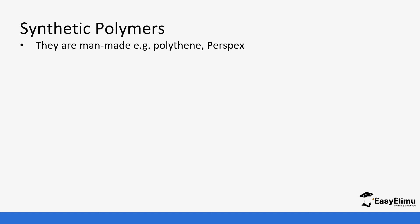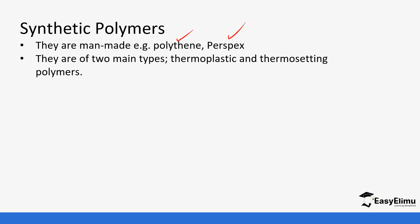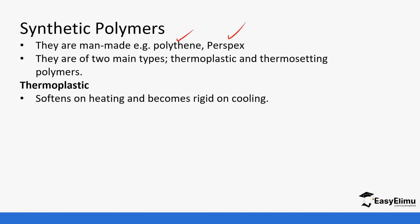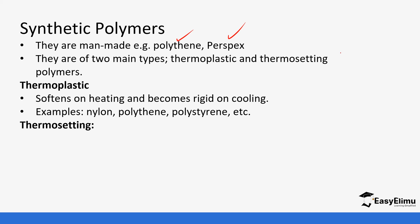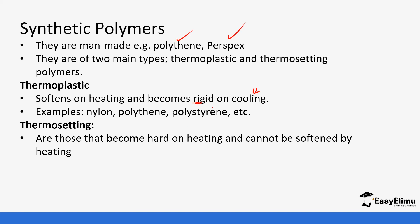Synthetic polymers include examples like polythene, and also synthetic rubber falls in this category. There are two main types: thermoplastic and thermosetting polymers. Thermoplastics are ones that soften when heated and then become rigid — examples are nylon, polythene, and polystyrene. When you heat them again after they have become rigid, they become soft again, so you can mold them into different shapes. Thermosetting polymers are soft at the beginning when they are being made, but once they set they form hard, rigid structures that cannot be softened again — that is why they are called thermosetting.